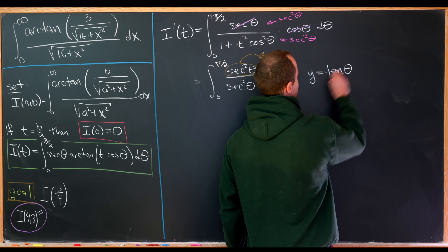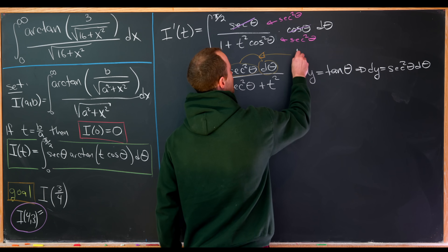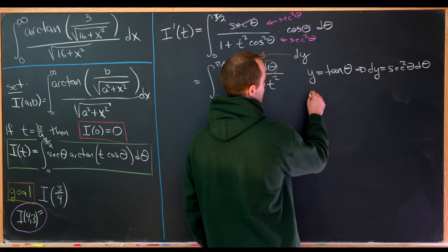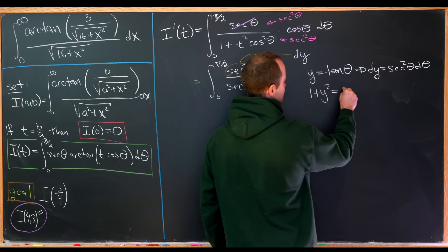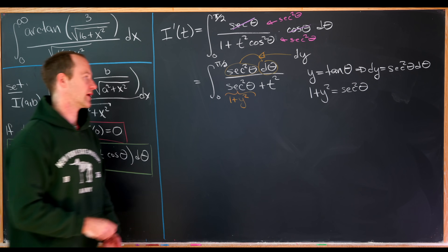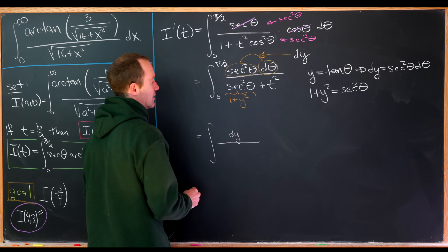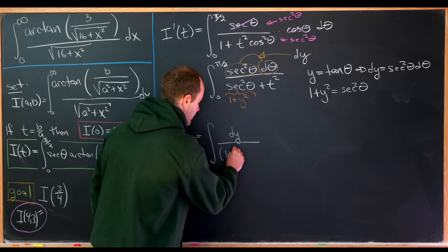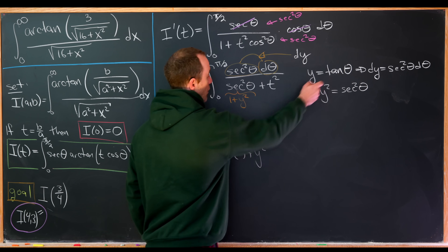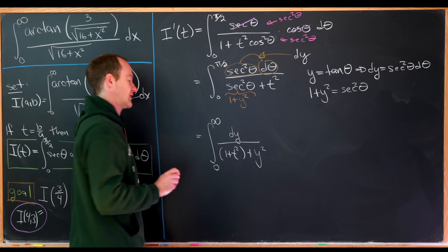We need to take care of the remaining secant squared theta in the denominator using the trig identity: 1 plus y squared equals 1 plus tangent squared equals secant squared. So we can rewrite secant squared as 1 plus y squared. That leaves us with the integral of d y over 1 plus t squared plus y squared, with bounds from 0 to infinity, since when theta is 0, y is 0, and as theta approaches pi over 2, y approaches infinity.